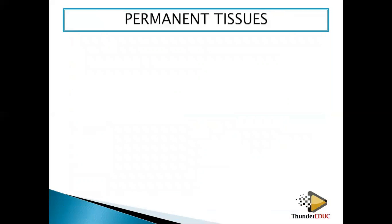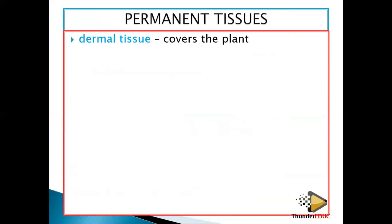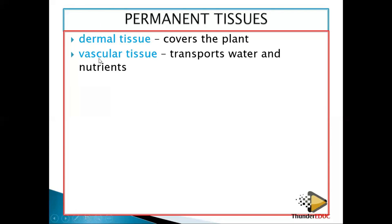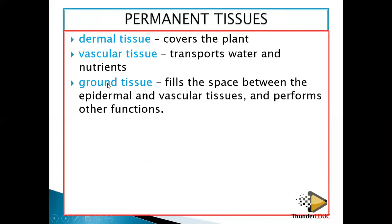Permanent tissues cannot modify. Dermal tissue covers the plant — it is on the outside, like a skin. Then you have vascular tissue, which is very important for transportation. Ground tissue fills the spaces between the epidermal and vascular tissue, and can also perform other functions like storage.